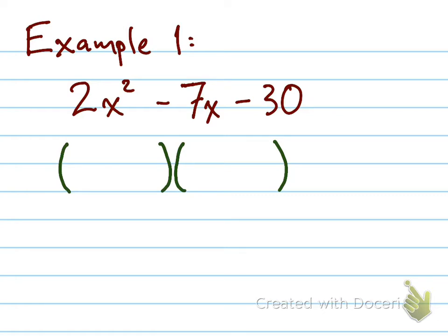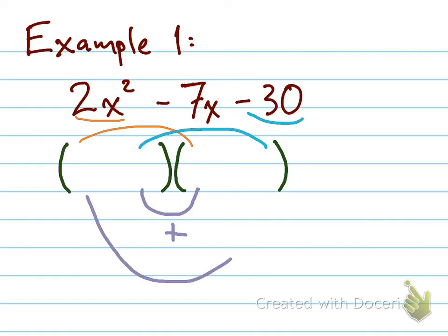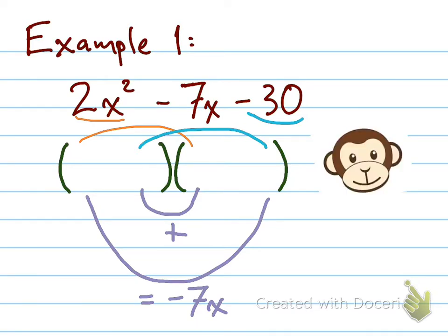Let's see, I would multiply, if I was multiplying, I would have multiplied the first terms together to give me the 2x squared. And I would multiply the last terms together to give me negative 30. And then, as we've said, the inner product plus the outer product is how we're going to get our negative 7x. And yeah, there's our monkey face.